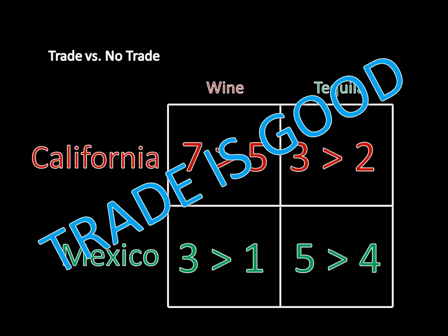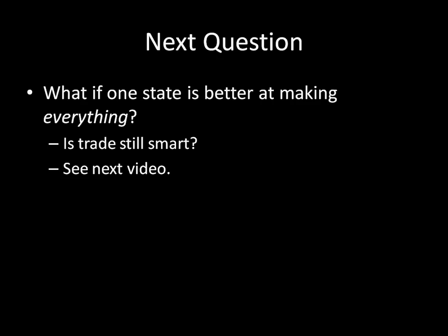So that's absolute advantage — a fairly straightforward reason why states would want to trade. But the next question is: what about a world where one state is better at making everything than another state? You might think to yourself, if I'm better at making everything, why should I bother trading? I could just produce stuff for myself and always be better off without trading. But that's actually not the case — trading is still smart in this instance, and we will see why in the next video.